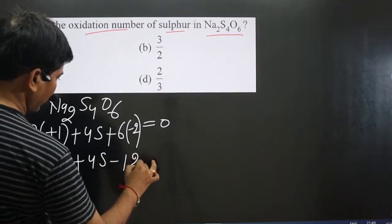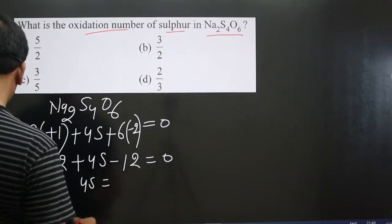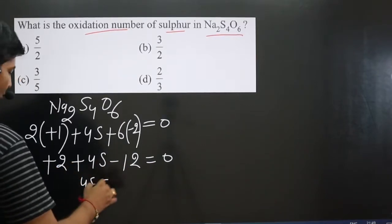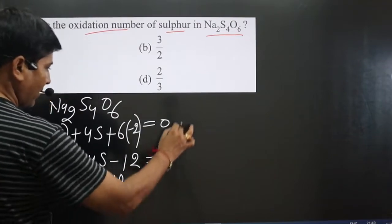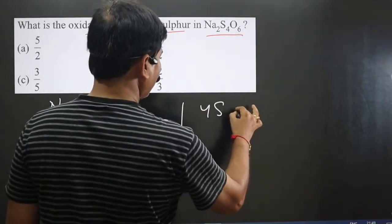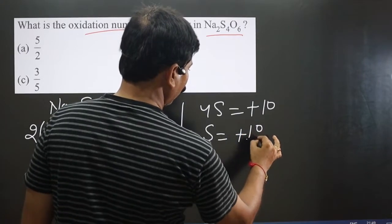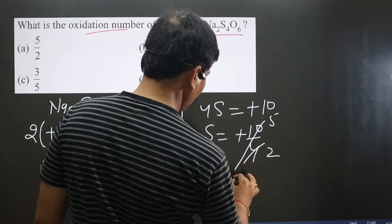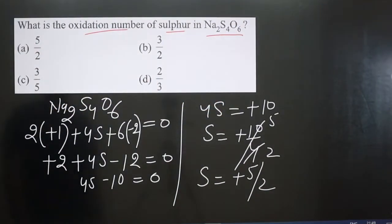Simplifying: 2(+1) + 4S + 6(−2) = 0, which gives 2 + 4S − 12 = 0, so 4S = +10, and therefore S = +10/4 = +5/2, which is five and a half. So sulfur is present in the +5/2 oxidation state — that is the first option.